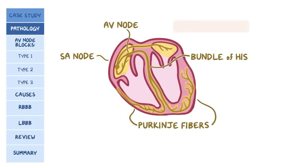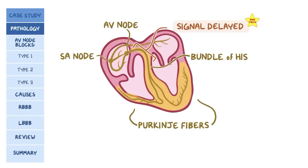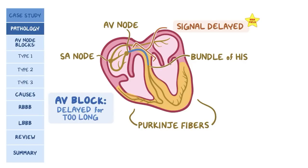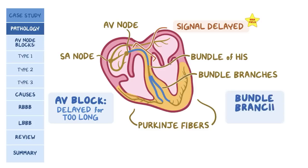Normally there is a delay in conduction at the AV node and the bundle of His, which gives some time for ventricular filling before the ventricle contracts. A heart block, or AV block, occurs when conduction is delayed for too long at the AV node or the bundle of His. Also, electrical activity may be blocked at the level of the bundle branches, which are called bundle branch blocks.